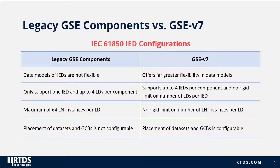In legacy GSE components, placement of datasets and GOOSE control blocks is not configurable, whereas it is far more configurable in GSE V7. The user can create their own datasets by selecting appropriate data objects and data attribute instances from the data model, and then assign created datasets to one or more GOOSE control blocks based on application requirements.